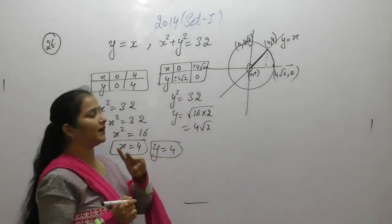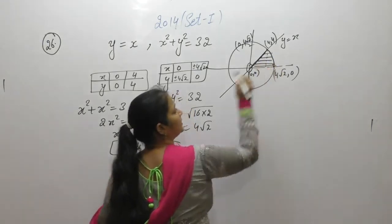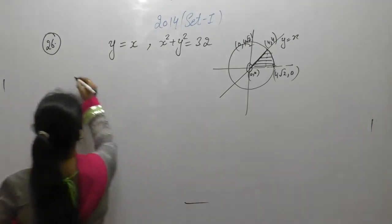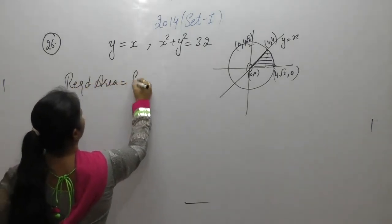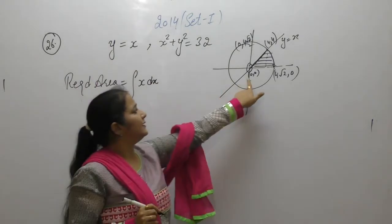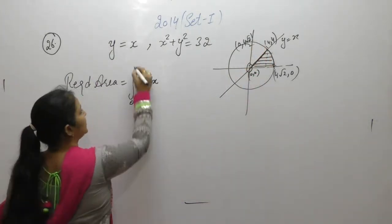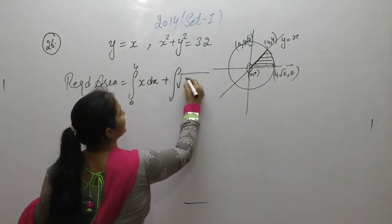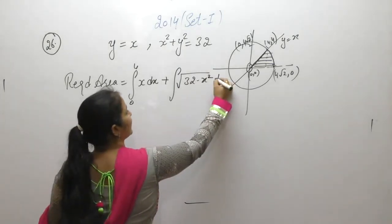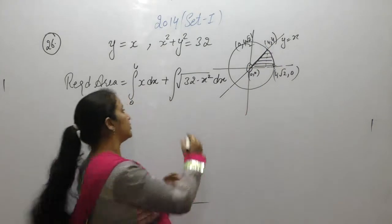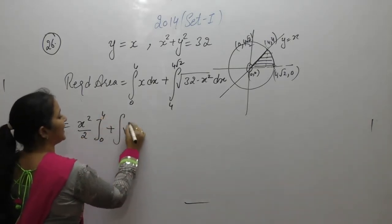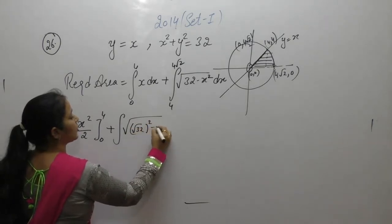Now we want to find the area. We move from the origin along the line, then from the line to the circle. The required area equals the integral from 0 to 4 of y dx for the line, plus the integral from 4 to 4√2 of √(32 − x²) dx for the circle. The integral of x gives x²/2, evaluated from 0 to 4.